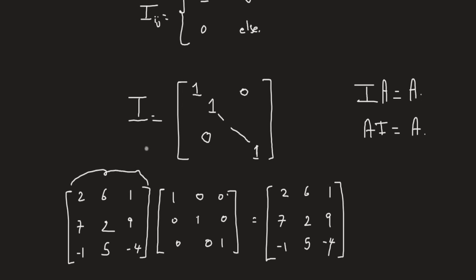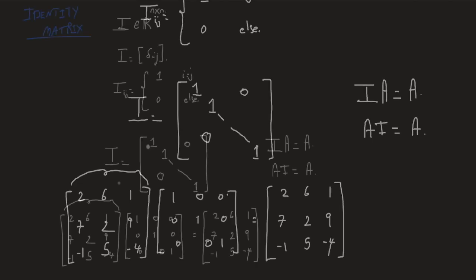Keep in mind that the identity matrix plays a critical role in linear algebra, because when you take matrix A and multiply it by the identity I, whether on the left or right, you always get back matrix A. Therefore, the identity matrix acts like one in the real number system.